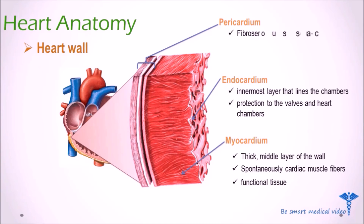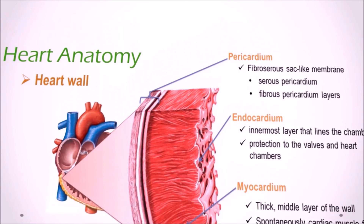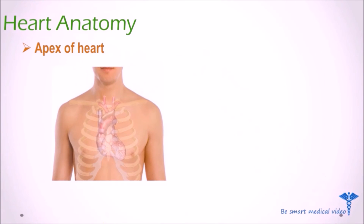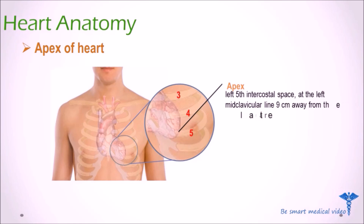The pericardium is the thin fibroserous sac-like membrane that surrounds and encloses the heart. It consists of an internal serous pericardium and an external fibrous pericardium layer. The tip of the left ventricle is the apex of the heart. The normal apex of the heart is situated in the left 5th intercostal space, at the left midclavicular line, 9 cm away from the lateral sternal border.